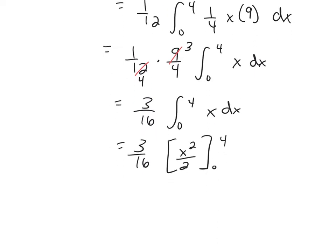And then if I plug in 4, I get 16 over 2. If I plug in 0, I get 0. The 16s will cancel, and the average value of my function over this region is 3/2.